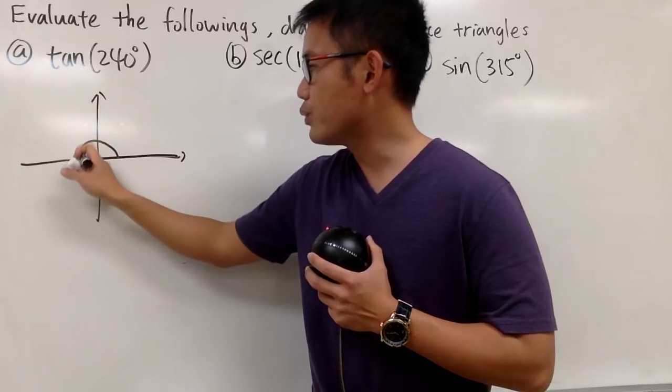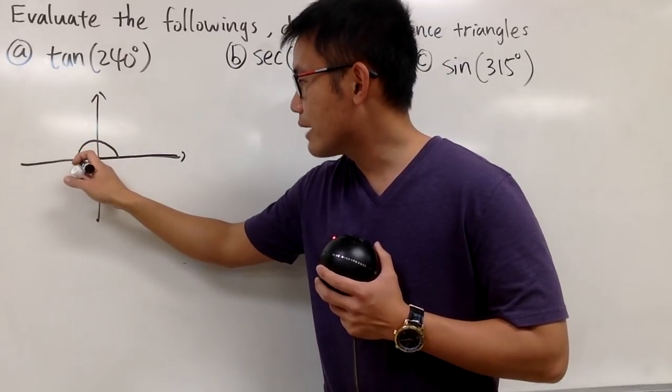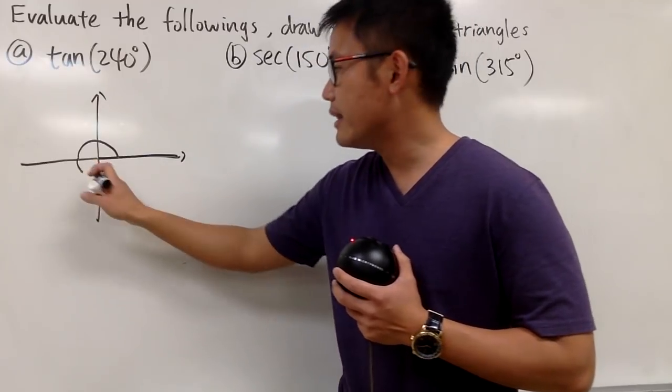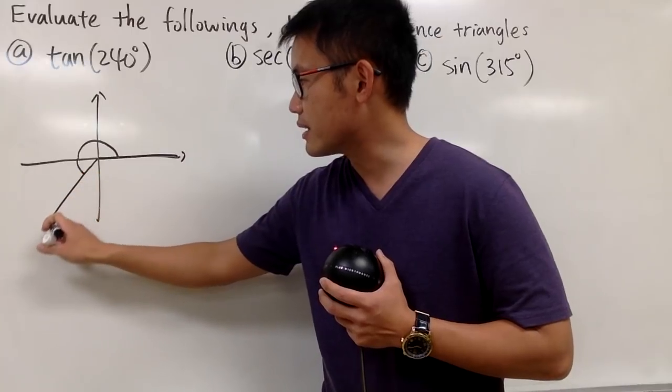So just keep track. From here to here is 180 already, right? And then we will just have to go 60 degrees more. And then you can just go ahead, connect the dots. So the picture will look something like this.